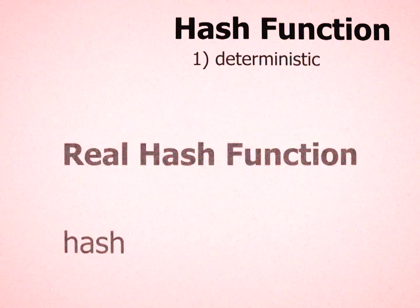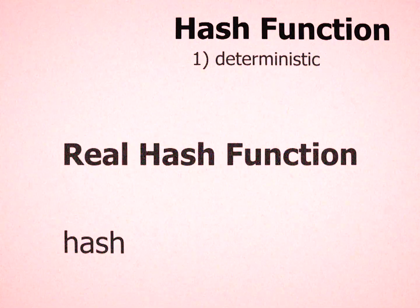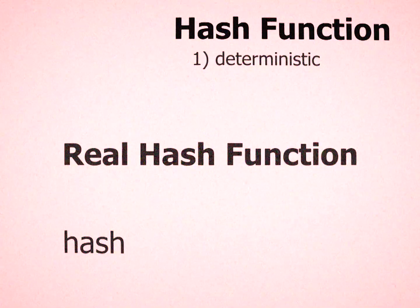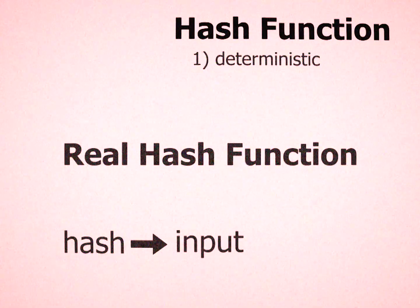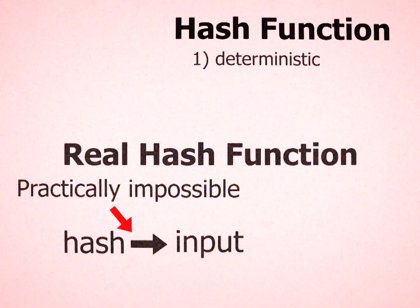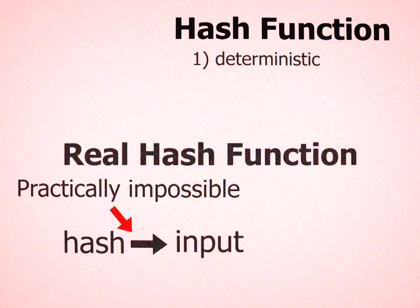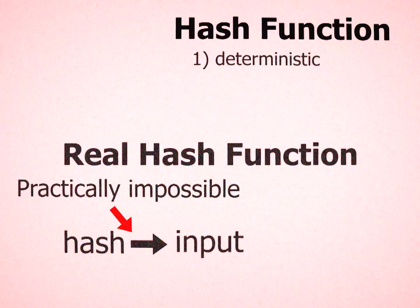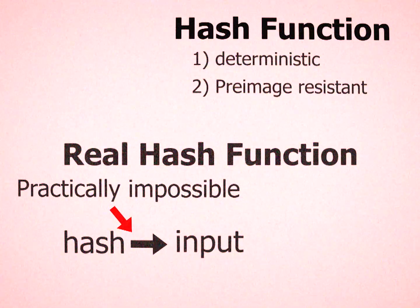But a real hash function should be reasonably hard, if not impossible, to find an input that produces the hash just by having the hash. This is known as pre-image resistance.